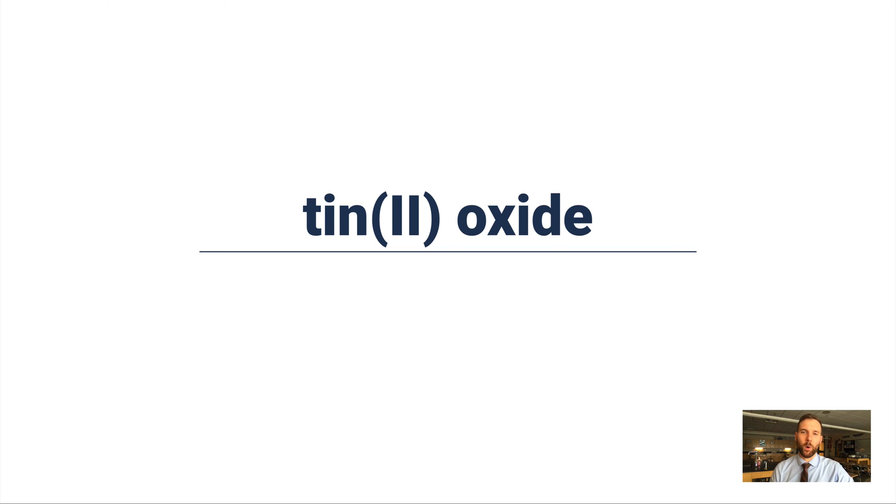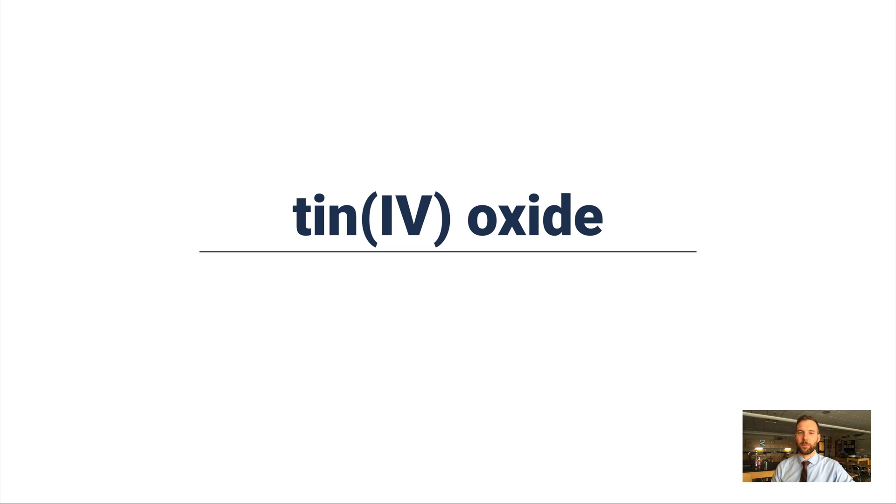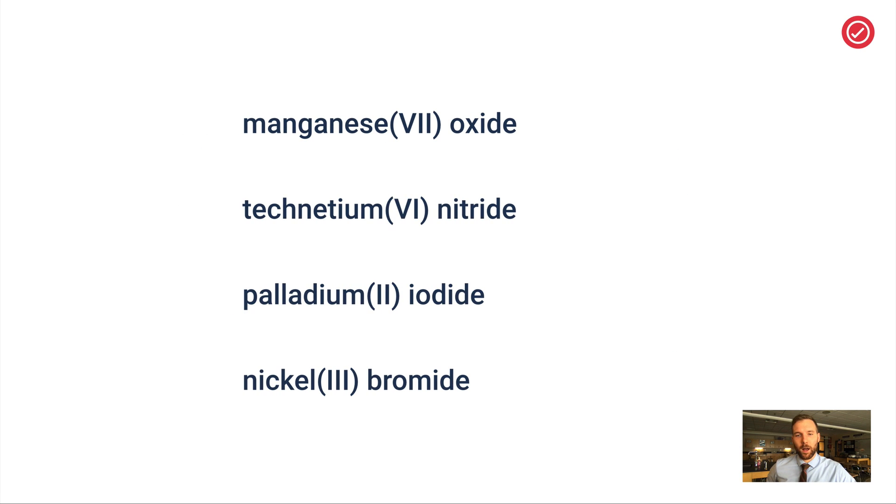Here's the next one: tin(II) oxide. Tin(II) is Sn²⁺, oxide is O²⁻, so I just need one of each—SnO. I got a little silly with these as I was coming up with examples. Let's do a different tin oxide, because tin could be plus 2 or plus 4. Here's tin(IV) oxide: Sn⁴⁺ with O²⁻ ends up being SnO₂.